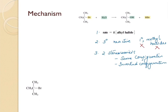Based on all of these important evidences and information, they were able to propose a mechanism for the SN1 reaction. First, the tertiary alcohol halide undergoes formation of a carbocation, wherein the carbon-halogen bond breaks and the Br⁻ is the leaving group. This step is a slow step, and it is the rate-determining step. It forms the carbocation.